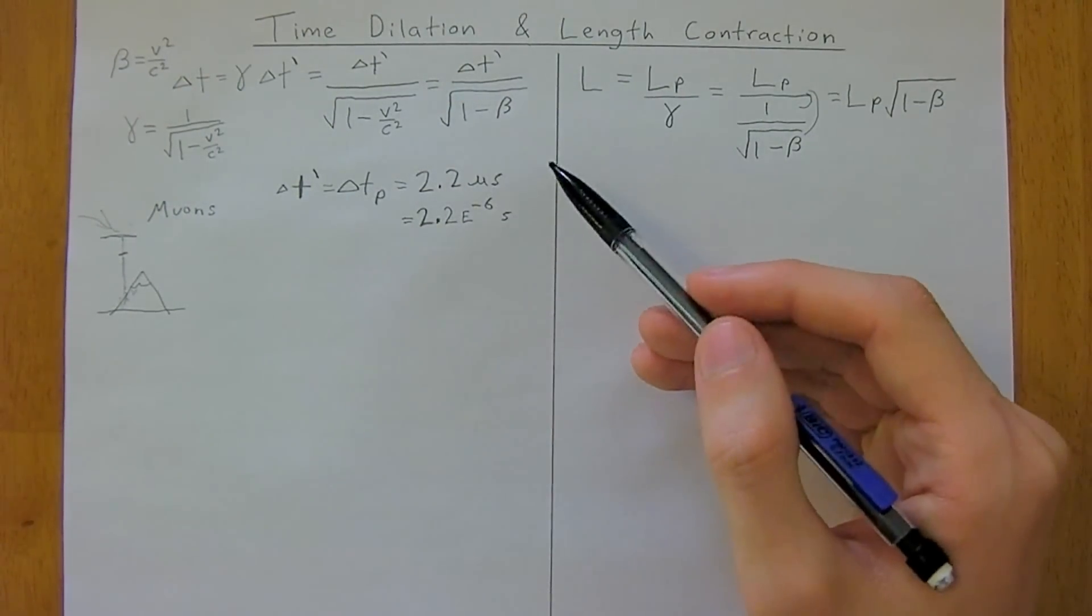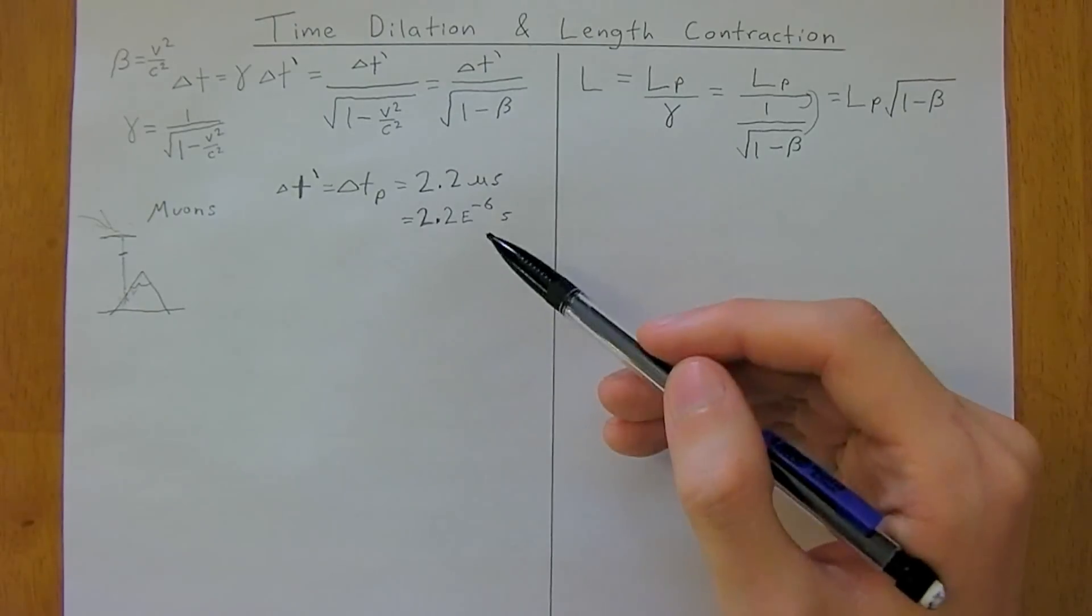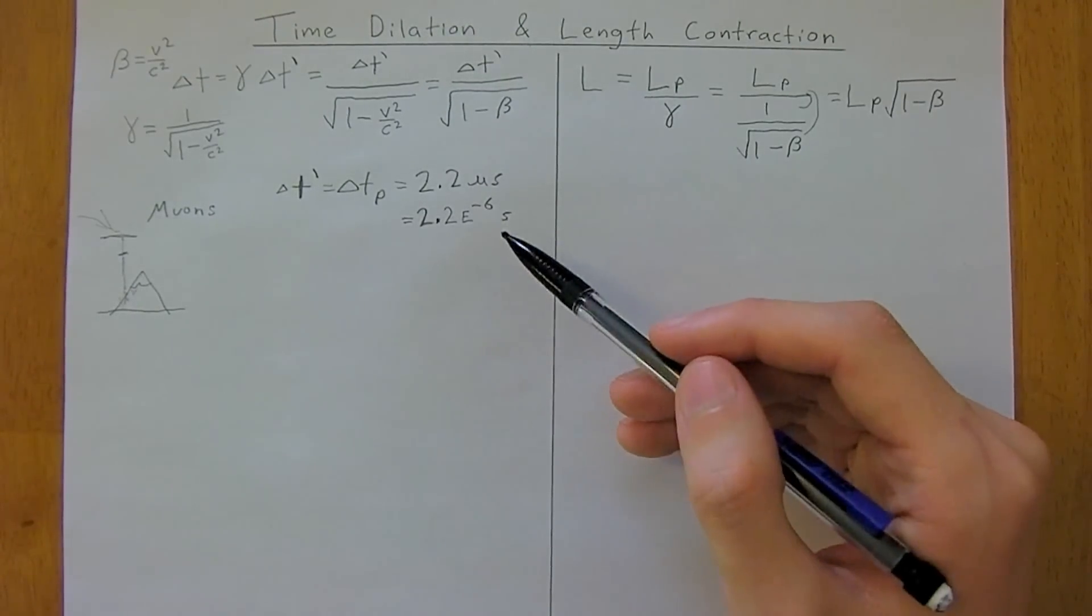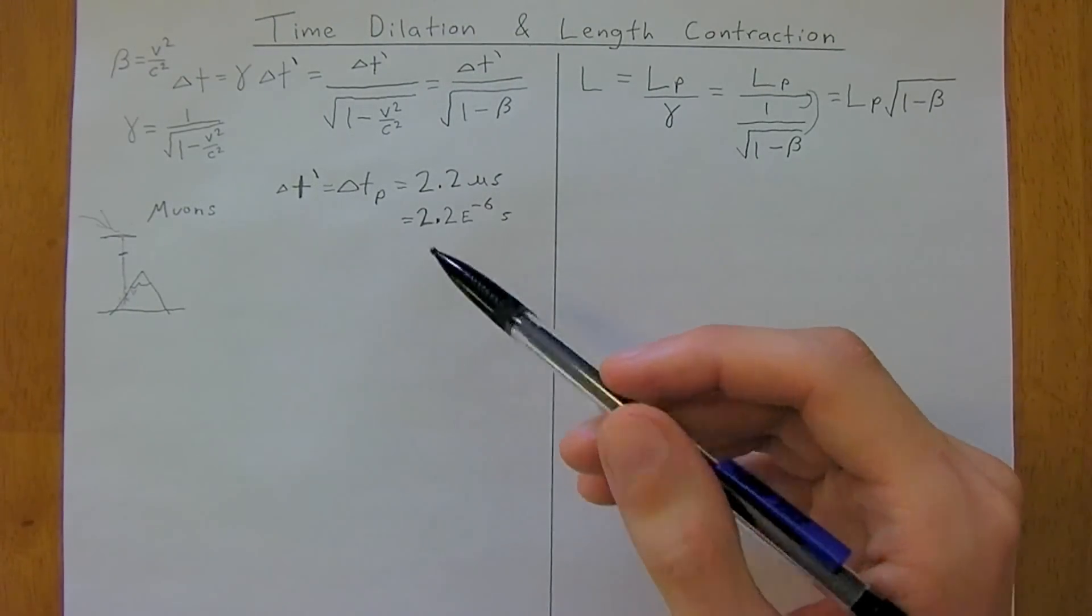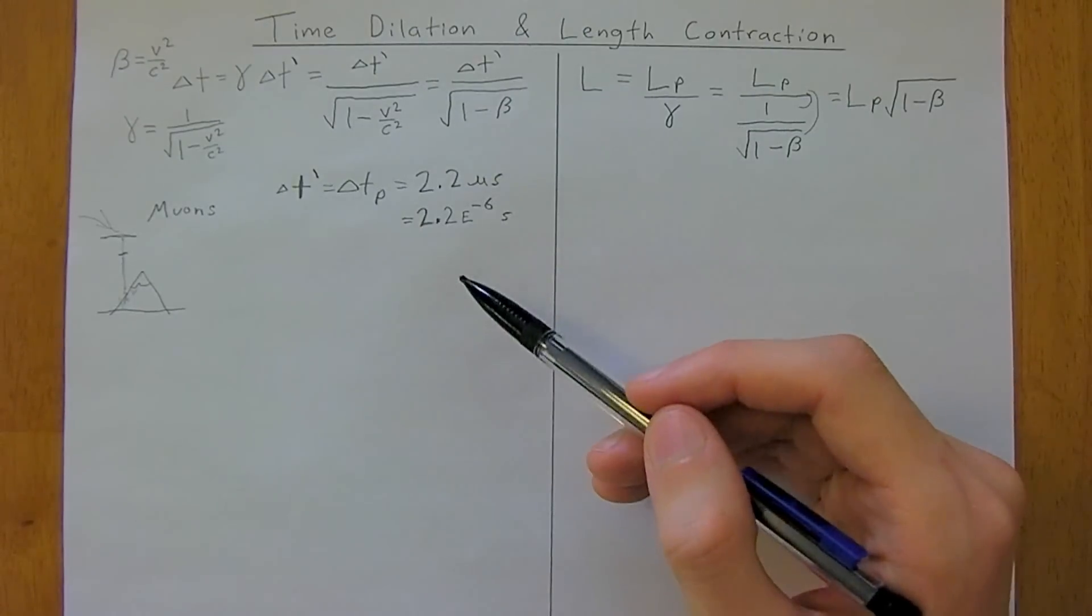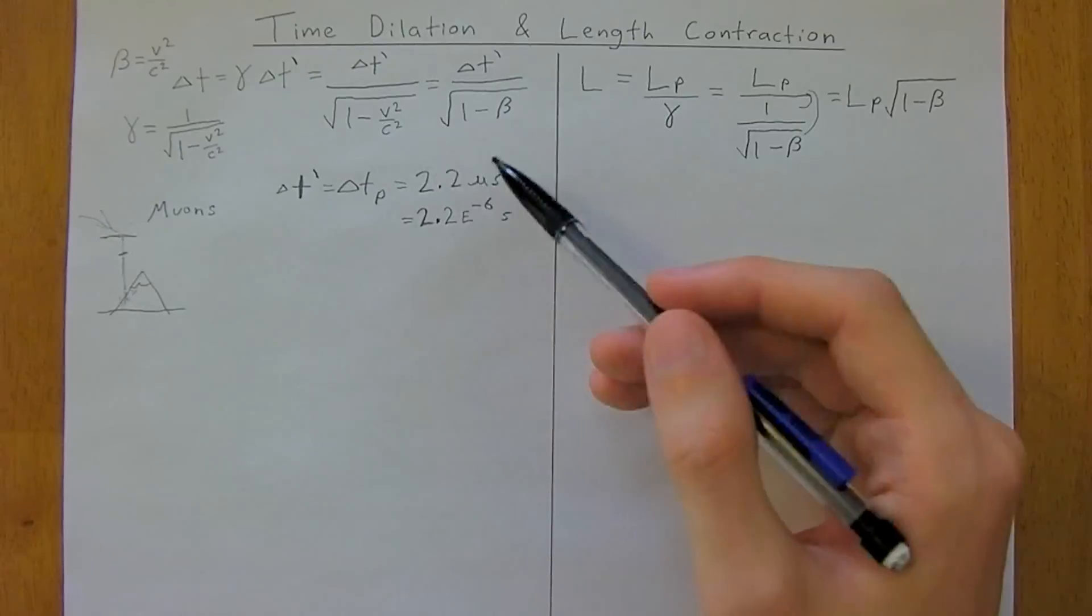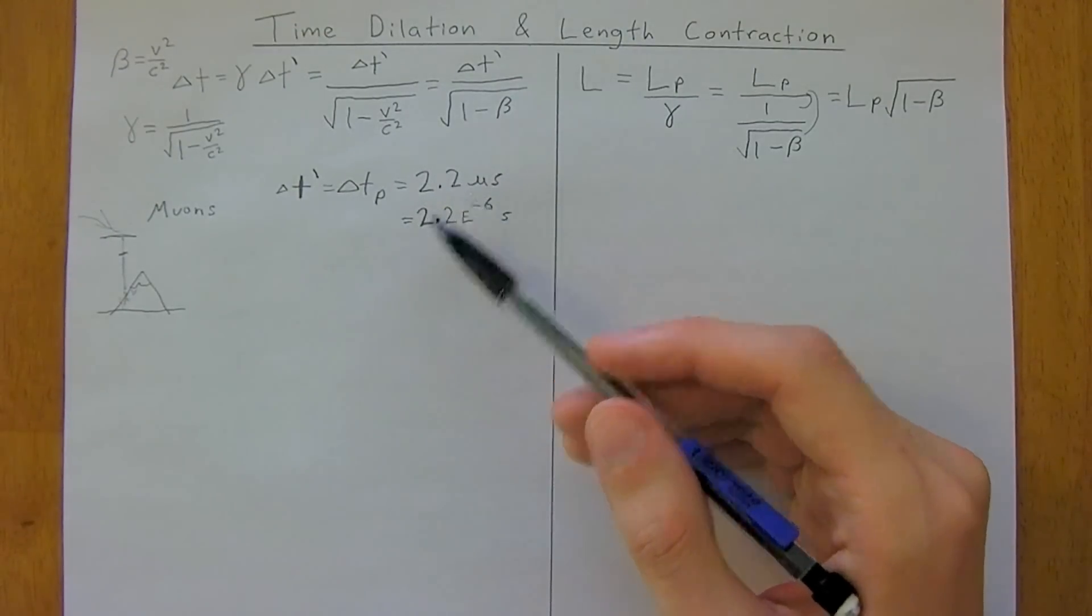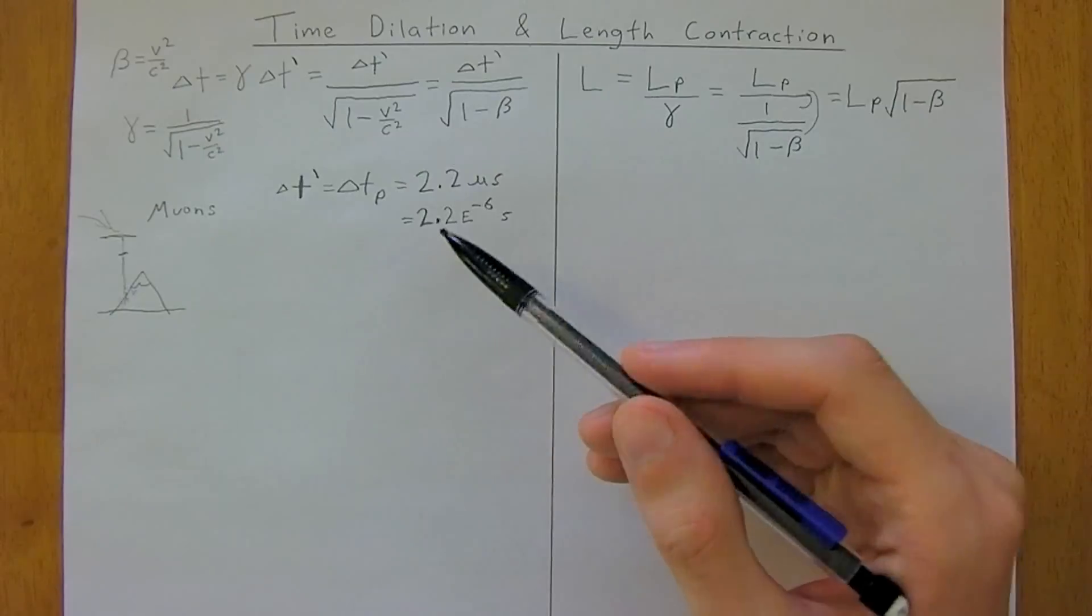And so, you introduce special relativity. So this is one of the applications that relativity has. In GPS systems, they account for relativity, but likewise, dealing with high-velocity particles, you need to account for relativity.